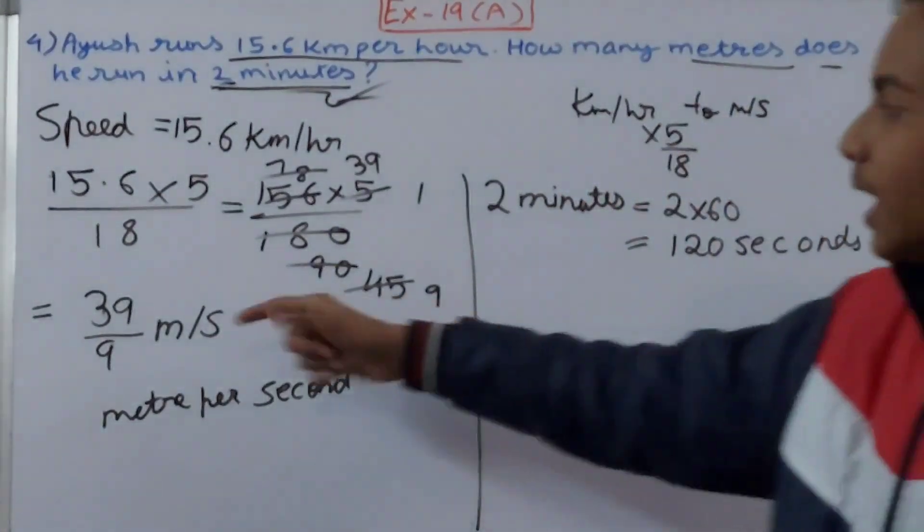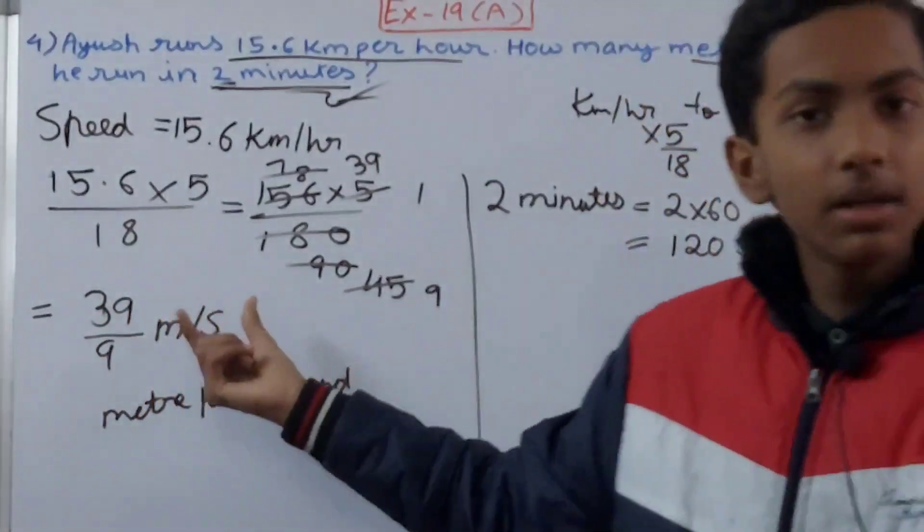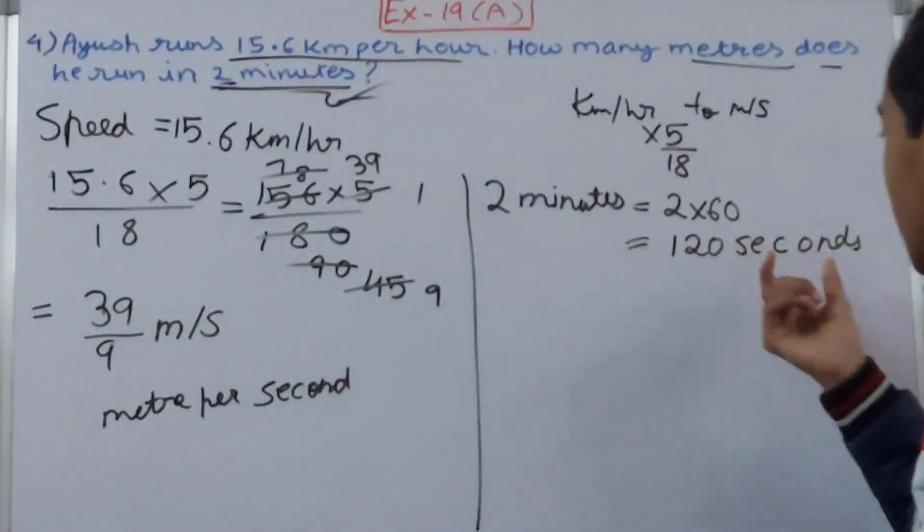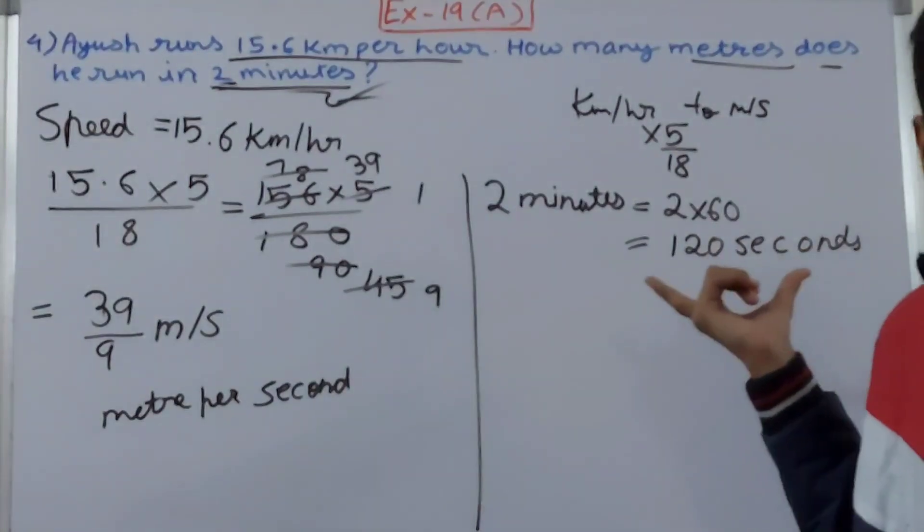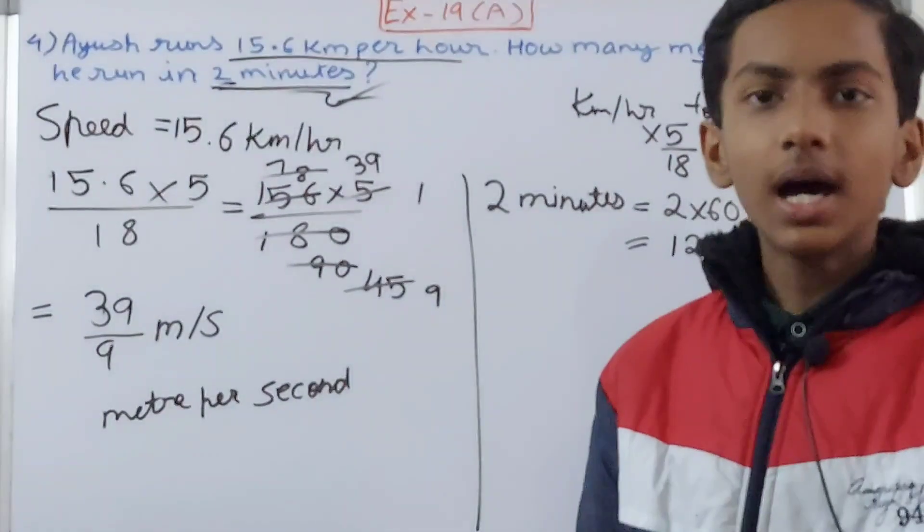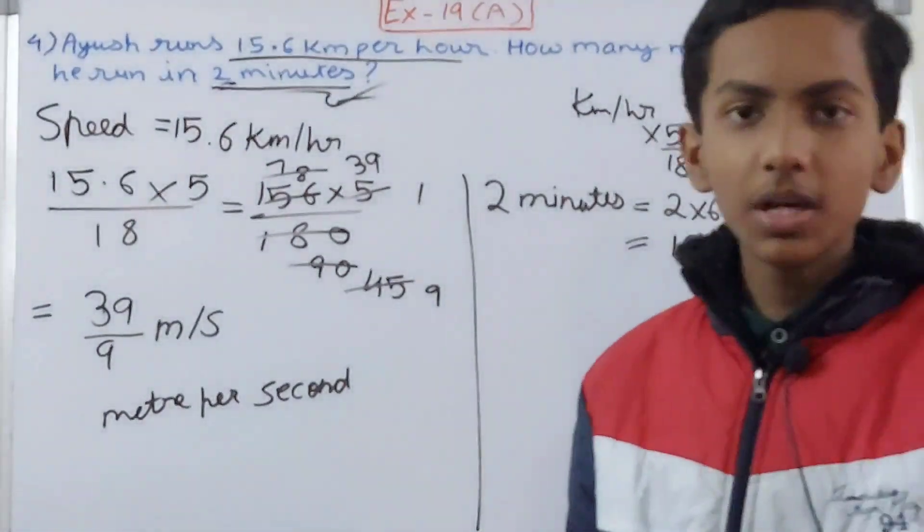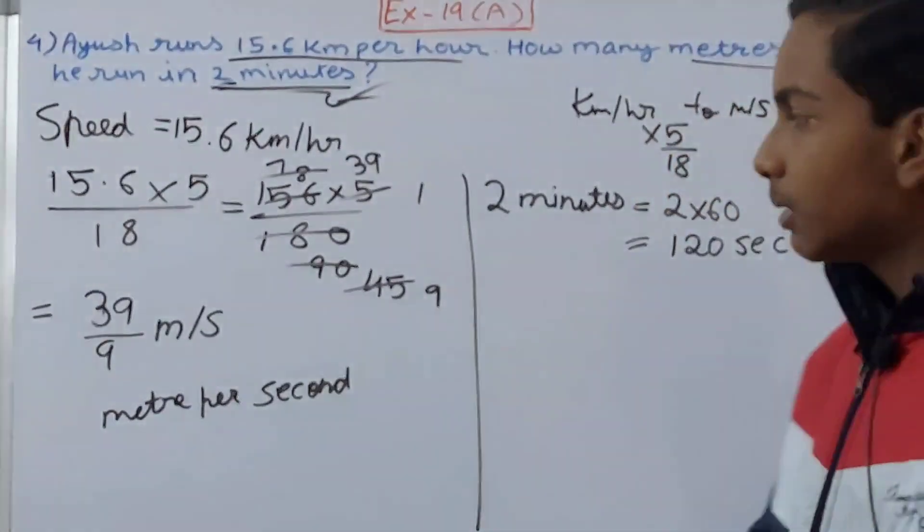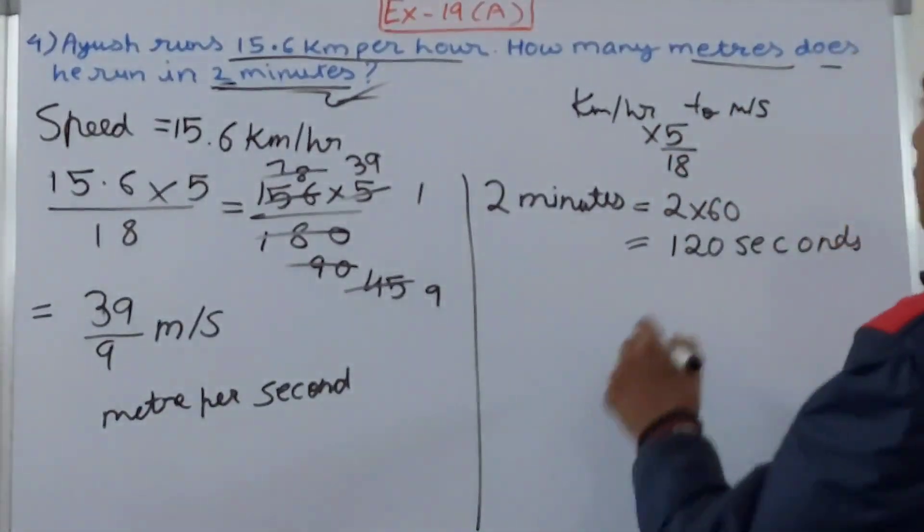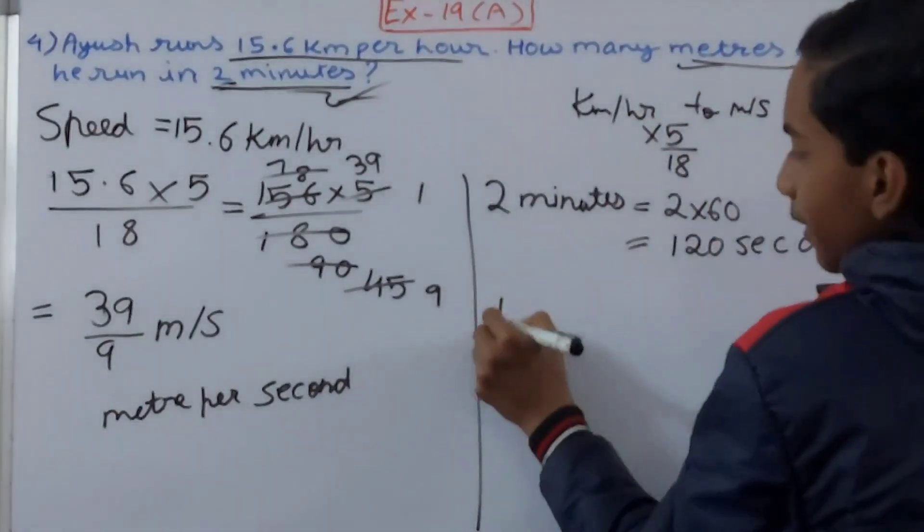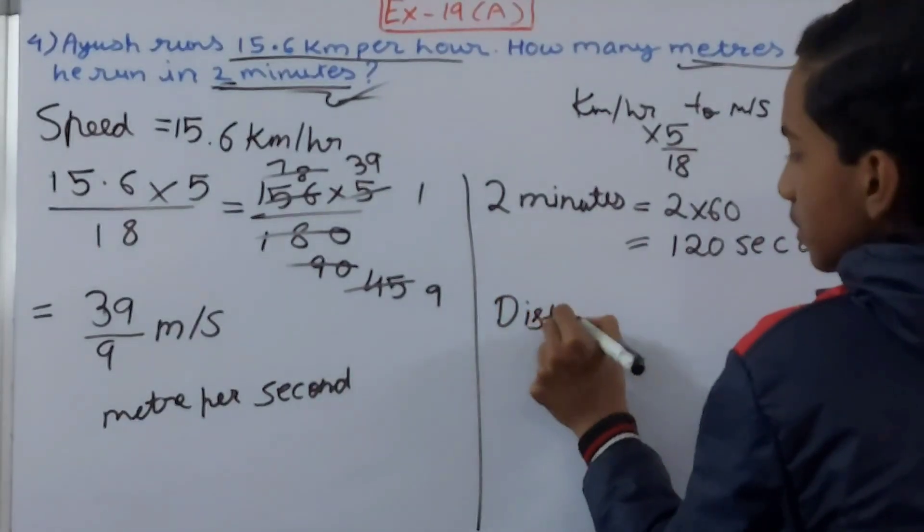Now you see that we have 39 by 9, the speed in meter per second, and we have the time in seconds. So the units are basically the same here, and it is appropriate to do the multiplication now. So it is asking the distance. We all know the distance equals to what?